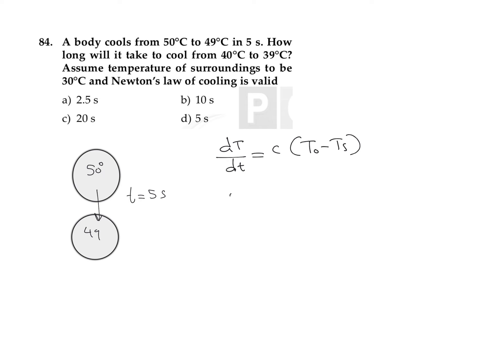In this situation, the difference in temperature is 1 and the time taken is 5 seconds. For the constant c, the average temperature of the object is 49.5 degrees Celsius. So we can write: 1/5 = c × (49.5 − 30), where 30 degrees Celsius is the surrounding temperature.